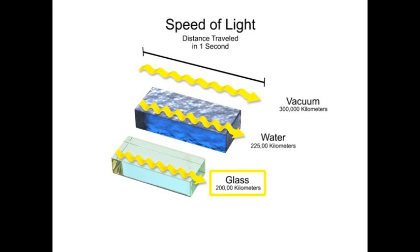Light travels very slowly through a diamond at about 41% of the speed of light, or 125,000 kilometers per second, which is less than half the speed of light in a vacuum.